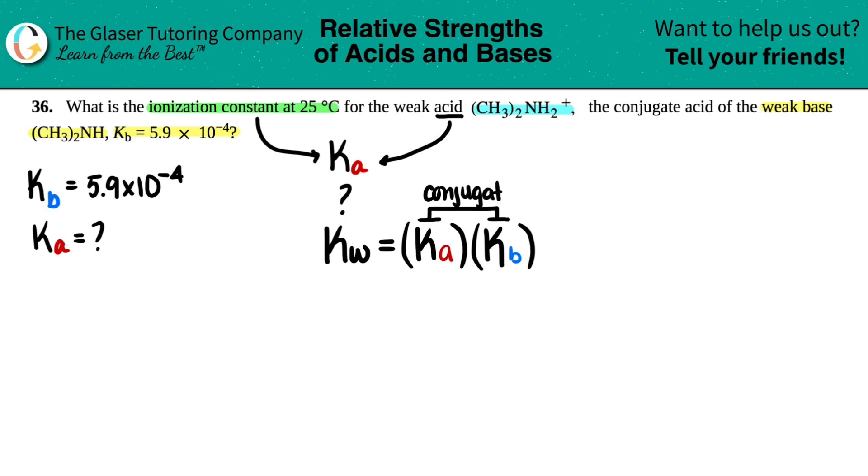You cannot be throwing in random different compounds to solve for Ka's and Kb's. The compounds that you're trying to solve for have to be conjugates, so they have to differ by just one hydrogen. So here are the two compounds in question. The beginning is all the same, CH₃₂, CH₃₂.